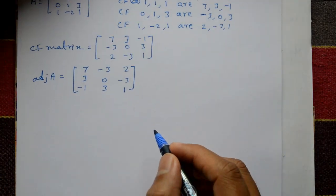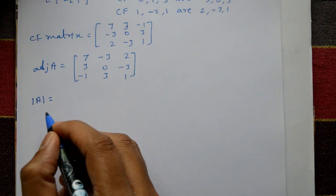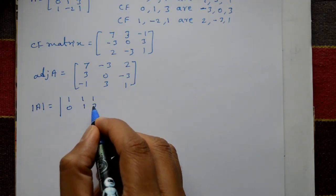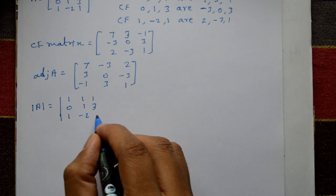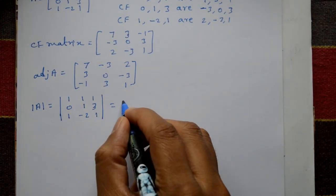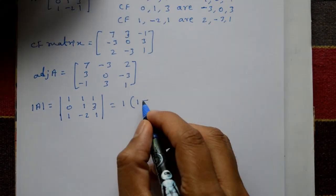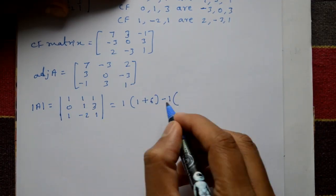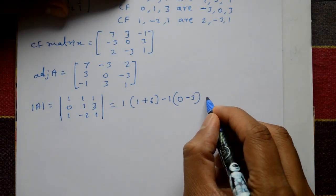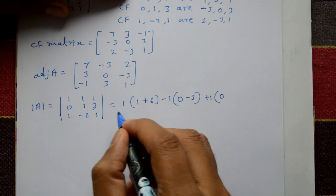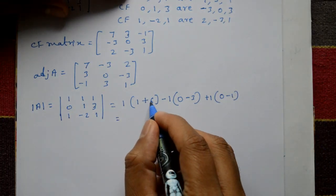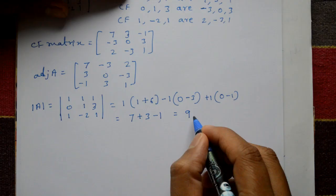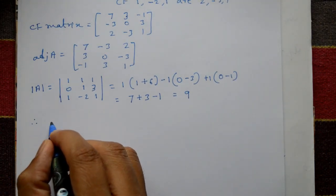Now, determinant of A, expanding along the first row: 1 into (1 minus (-6)) gives 7, minus 1 into (0 minus 3) gives plus 3, plus 1 into (0 minus 1) gives minus 1. So determinant of A is equal to 7 plus 3 minus 1, which equals 9.